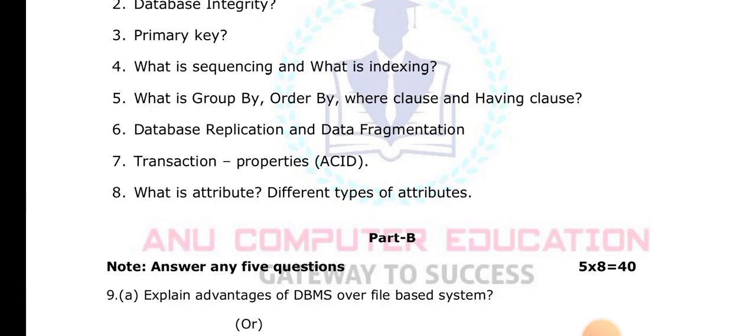What is DBMS and its advantages over a file system? In earlier days, data was maintained in files. DBMS provides more protection in terms of security — no unauthorized person can access the database; users must provide a username and password. Data redundancy is removed and data is always consistent. DBMS also supports backup and recovery — if hardware failure or any error occurs, the data can be retrieved from the backup.